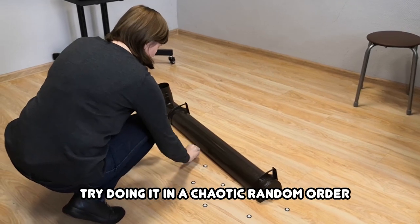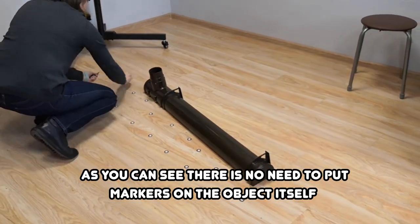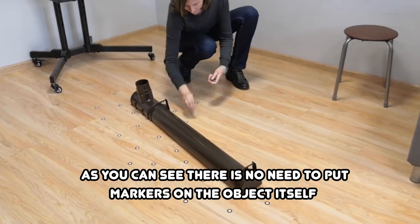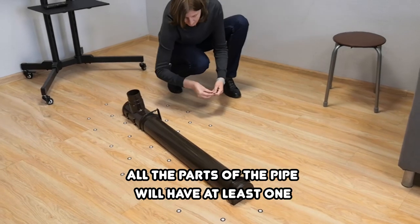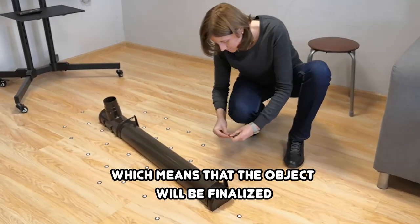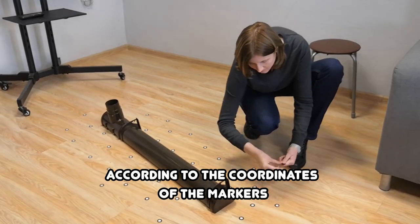Try doing it in a chaotic random order. As you can see, there is no need to put markers on the object itself. All the parts of the pipe will have at least one marker in the point cloud, which means that the object will be finalized according to the coordinates of the markers.